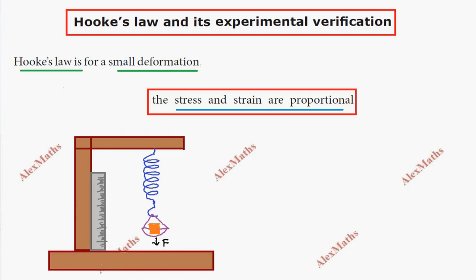For example, the readings on the scale are: 0, 5, 10, 15, 20. At each reading, we measure the position using a pointer on the side of the scale.